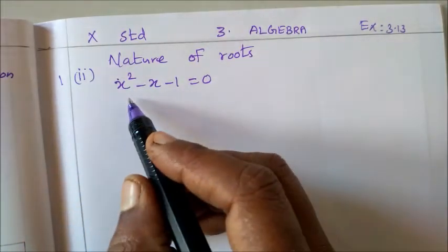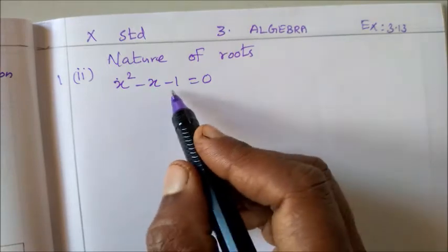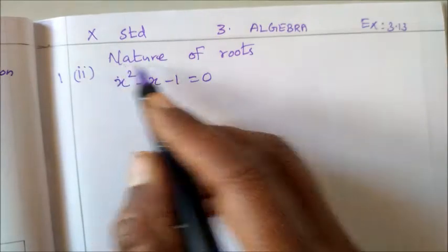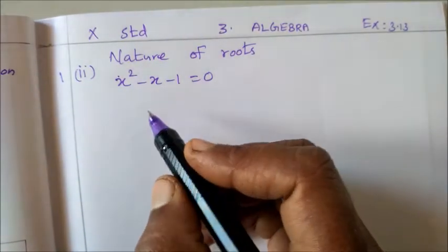First sum, second subdivision: x² - x - 1 = 0. Quadratic equation is given. So quadratic equation is given, nature of roots find out.